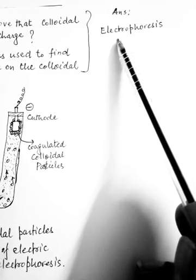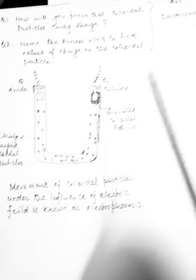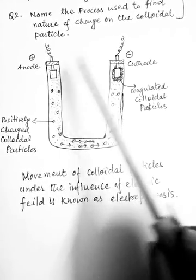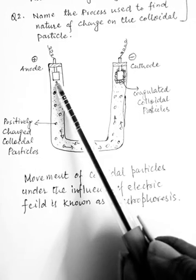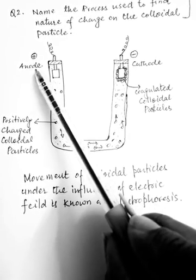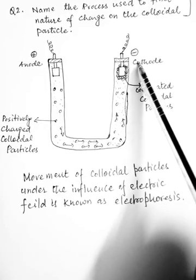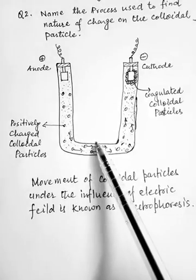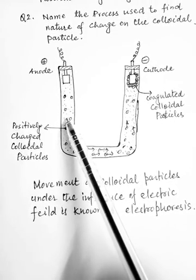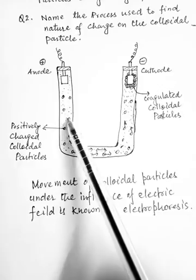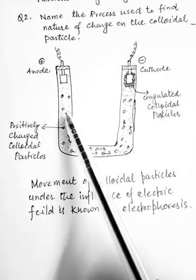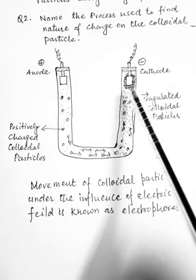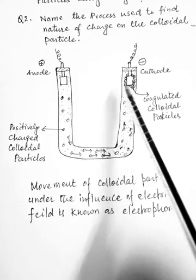In this experiment, we take a U-tube with two platinum electrodes fixed at the two ends. One is the anode, connected to the positive terminal of the battery, and the other is the cathode, connected to the negative terminal. The tube is filled with a positively charged colloidal solution — in this case, ferric hydroxide.